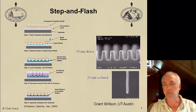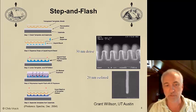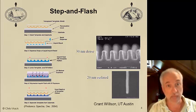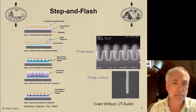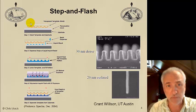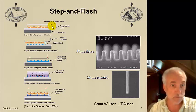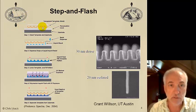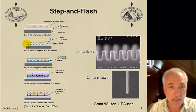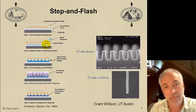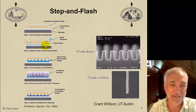Another approach developed by Grant Wilson and S.V. Srinivasan at the University of Texas at Austin is step-and-flash lithography. At first it looks the same: we have a template with the relief pattern made into it. It's generally a transparent material — the same fused silica used for making photomasks in optical lithography. It's got a release layer coated onto it so that it won't stick to our imprint resist. Then, on the substrate, we put a liquid imprint material — a liquid resist.